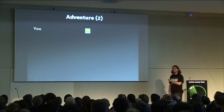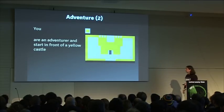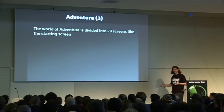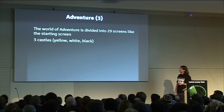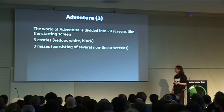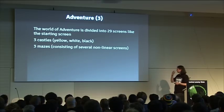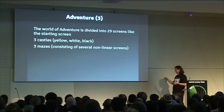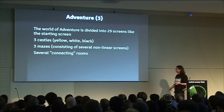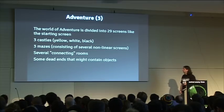So, how do you play it? This is you. You start as an adventurer in front of a castle, and your job is to bring the enchanted chalice back to that castle. For this you have a world consisting of 29 screens. There are three castles and three mazes consisting of several non-linear screens — when you move out to one side you can get to the same room from a different direction. You've got to learn your way by trial, not by thinking of it as a plain grid area.